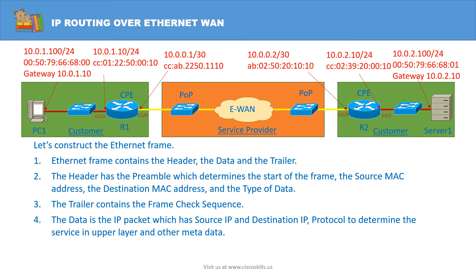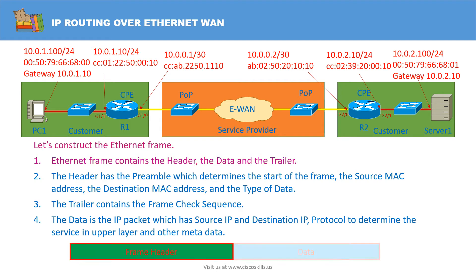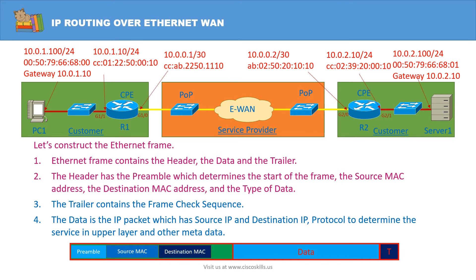Let's construct the Ethernet frame. The Ethernet frame contains the header, the data, and the trailer. The header has a preamble which determines the start of the frame, the source MAC address, the destination MAC address, and the type of data. The trailer contains the Frame Check Sequence to verify the integrity of the frame. The data is the IP packet, which has the source IP, the destination IP, and the protocol to determine the service in the upper layer, along with other metadata.